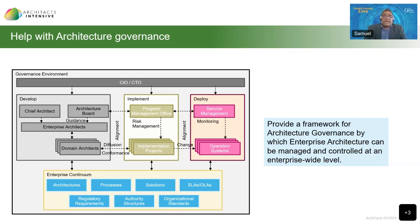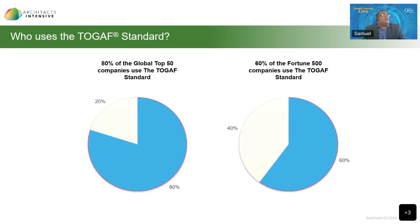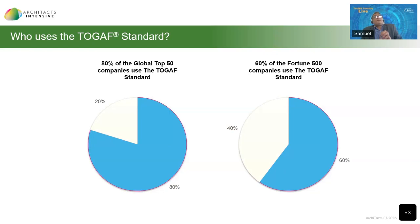Lastly, let's talk about who actually uses the TOGAF standard. 80% of the global top 50 companies use and benefit from the TOGAF standard. 60% of the Fortune 500 companies use the TOGAF standard one way or another. So you can see that the TOGAF standard is very popular and widely used across the industry. I'll hand control back to conclude this session with Steve and see if there are any questions.